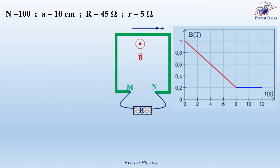In the first figure, a coil has 100 identical square loops, each of side A equal to 10 cm. The coil is connected with a resistor of resistance R equal to 45 ohms. The internal resistance of the coil is r equal to 5 ohms, and the coil is placed in a uniform magnetic field whose magnitude B varies with time according to the graph. B decreases from 1 to 0.2 Tesla during the first 8 seconds, then remains constant between 8 and 12 seconds. The coil is represented between M and N, connected to the resistor R, and the magnetic field is directed outward toward the observer.